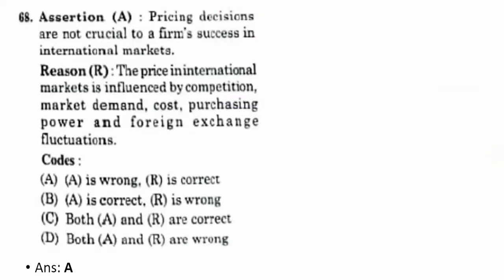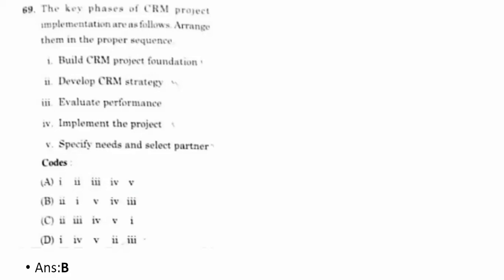Sixty-eighth question — assertion and reasoning: pricing decisions are not crucial to a firm's success in international markets. The reason is price in international markets is influenced by competition, market demand, cost, purchasing power, and foreign exchange fluctuation. The answer is A — A is wrong, R is correct. Sixty-ninth question: arrange key phases of CRM project implementation in proper sequence. The correct option is B — two, one, five, four, three: develop CRM strategy, build CRM project foundation, specify needs and select partner, implement the project, evaluate performance.